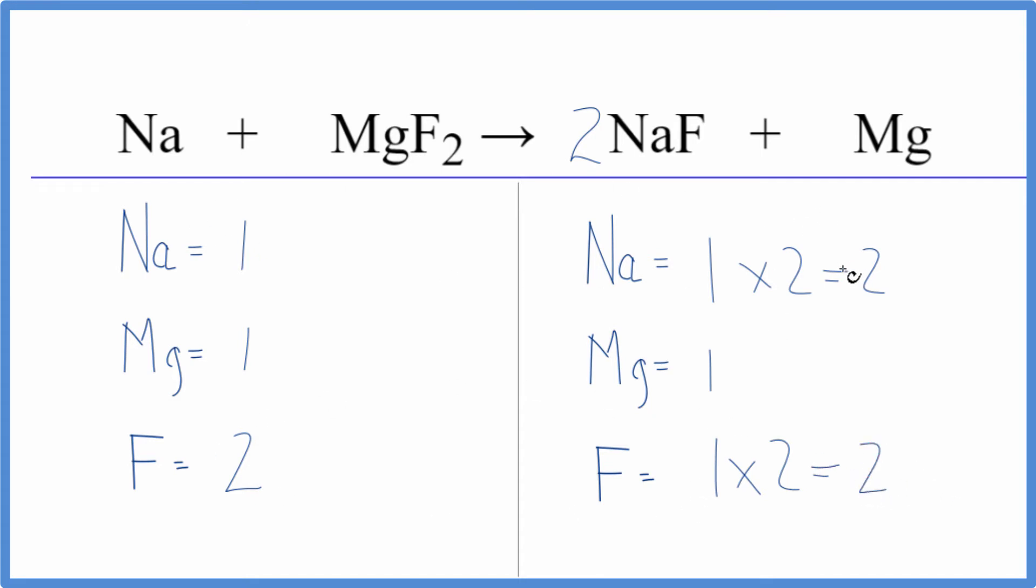Sodiums, they're not balanced now. But that's not a problem because the sodium, it's all by itself. Put a two as our coefficient, one times two. That would give us two, and now these are all the same on each side. This equation is balanced.